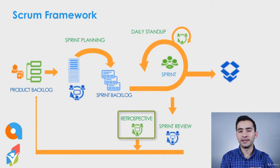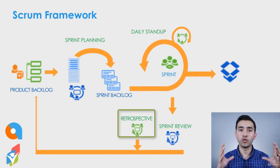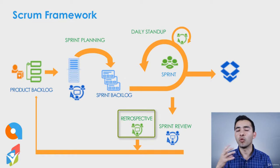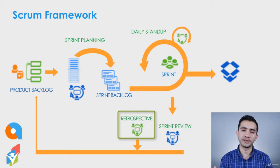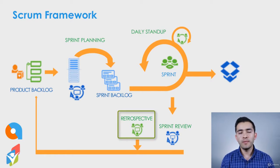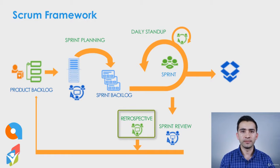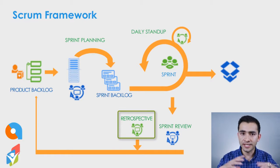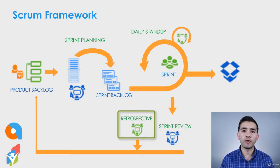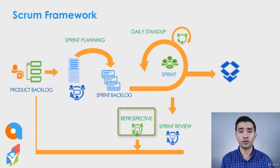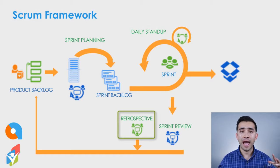This retrospective meeting is two hours for a four-week sprint, and could be a one-hour meeting for a two-week sprint. The Scrum Master is the facilitator who sets the stage for the team, creating a safe container where everybody feels empowered to talk about not only the good things but also challenges or conflicts happening within the team.